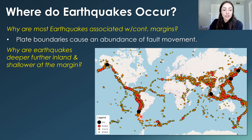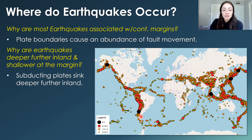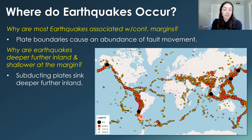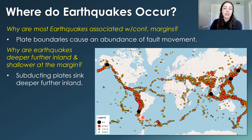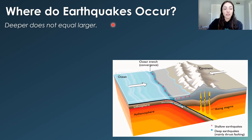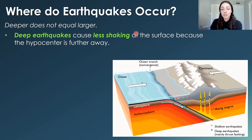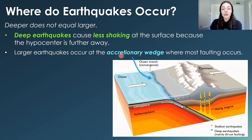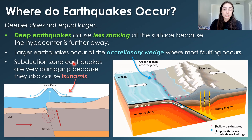Why are earthquakes deeper further inland and shallower at the margin? Subducting plates sink deeper as they go further inland, so the deeper the plates sink, the deeper the hypocenters. Right at the margin where the plate is just starting to subduct, you get shallow earthquakes — and as you can see, shallow earthquakes are actually higher in magnitude. Deeper does not equal larger; deep earthquakes cause less shaking at the surface because the hypocenter is further away. Larger earthquakes occur at the accretionary wedge, and subduction zone earthquakes are especially damaging because they can cause tsunamis.